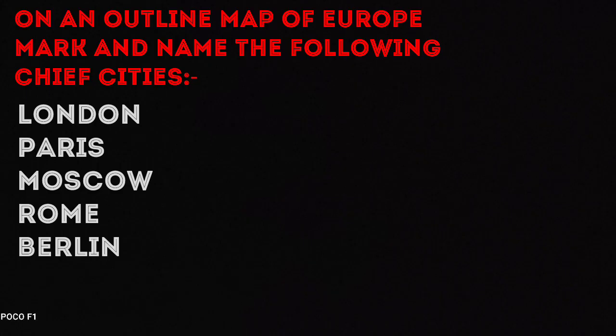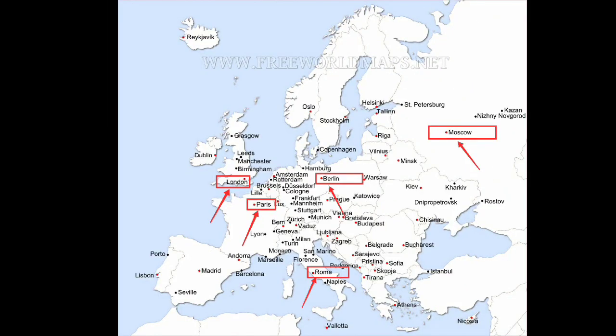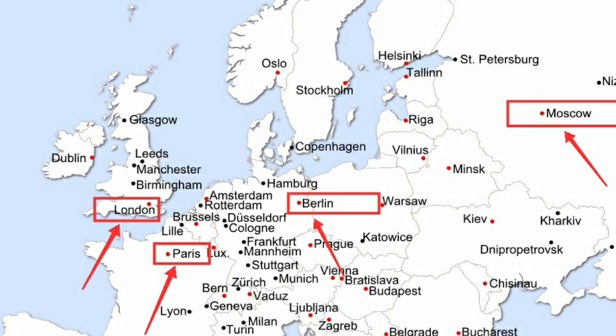On an outline map of Europe, mark and name the following chief cities. For this, we will use black dots to pinpoint these places on the map. This map deals with the chief cities of different states of Europe. All these cities are to be marked with black dots and their respective names are to be written with them.